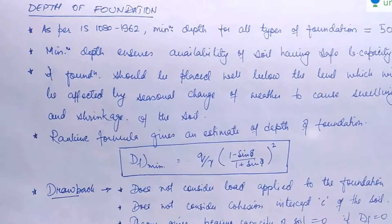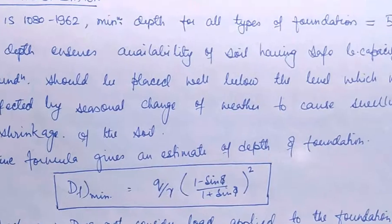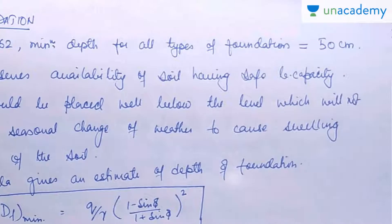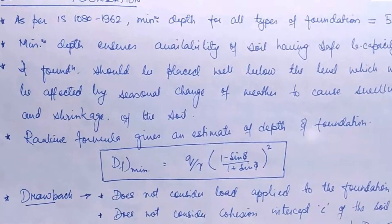To perform the function properly, a footing must be laid at a suitable depth below the ground surface. The vertical distance between the ground surface and the base of the footing is known as the depth of footing. As per IS 1080:1962, the minimum depth for all types of foundation should be at least 50 centimeters.